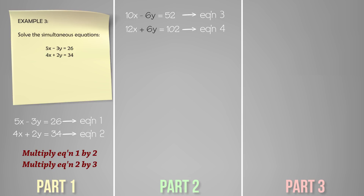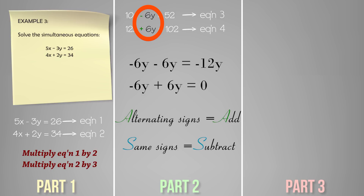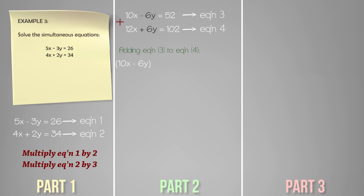Let's examine the y terms we are about to eliminate: we have negative 6y and positive 6y. If we subtract them we get negative 12y instead of zero, because they have alternating signs. If we add them however, we get zero. When you reach this part of the problem, look at the two terms you are about to eliminate — for alternating signs, add; for same signs, subtract. Since we have alternating signs here, we add the equations.